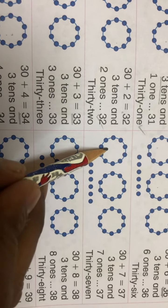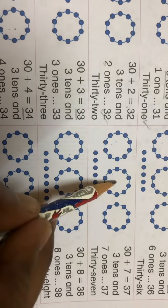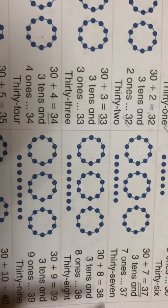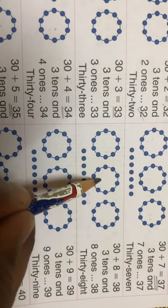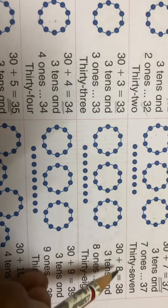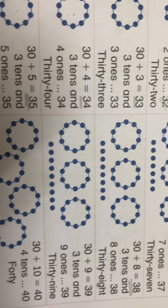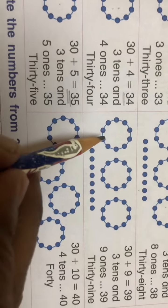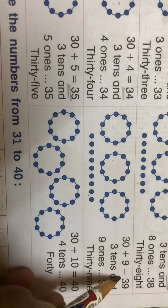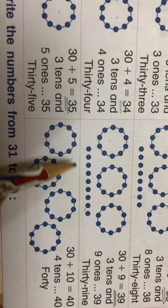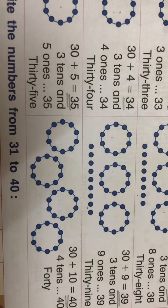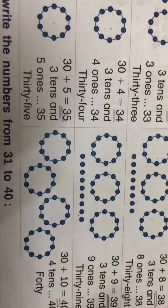Same way, if there are three tenths and seven ones, it will make 37. Then if there are three tenths and eight ones... if there are six tenths it will make 60.